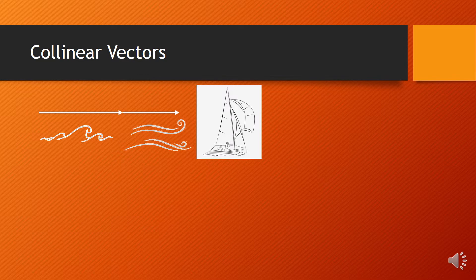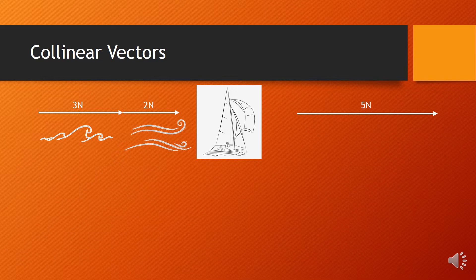Let's say the ocean current applies a force of three newtons on the boat and the wind applies a force of two newtons on the boat. In this case we get a combined effect — a stronger force on the boat — and it will equal five newtons in the same direction. So when you get collinear vectors pointing in the same direction you can add them end to end: arithmetically, three plus two equals five.